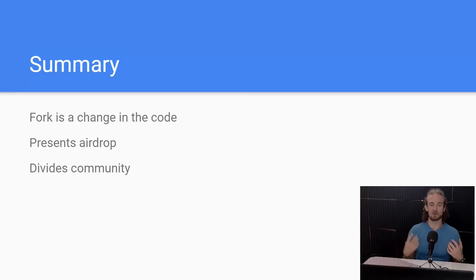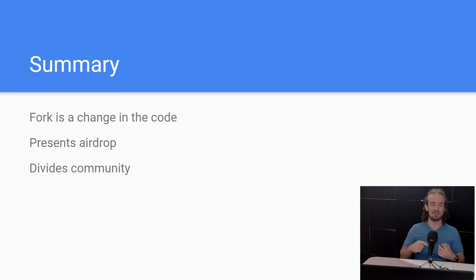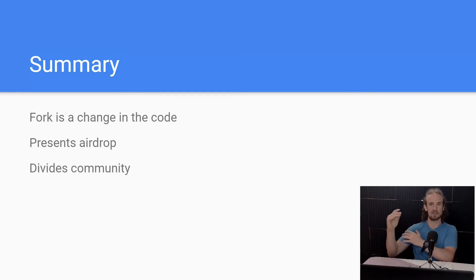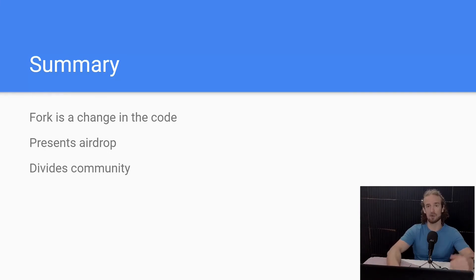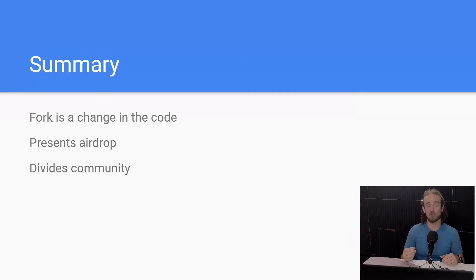To summarize: a fork is a change in the code that can happen for a number of reasons — a major update or the result of a contested decision. Whatever the cause, a fork is a split in the code resulting in two separate chains. They both continue to exist with a shared history, which means you generally get an airdrop of the new coins. However, it does divide the community, can lead to less support, infighting, and fractures the group that was united in their purpose. Time will tell what happens with Terra, and it'll be interesting to see how that all plays out. Thanks for watching, and I'll see you next time.